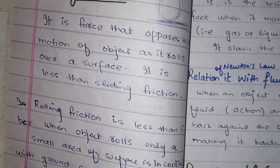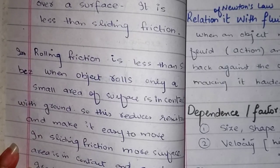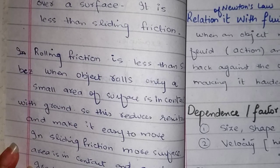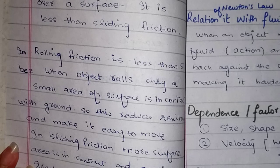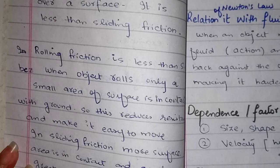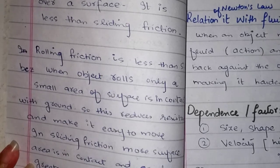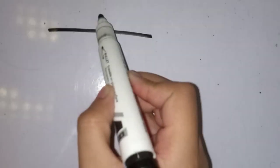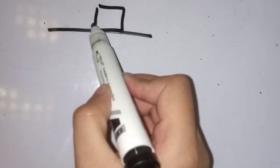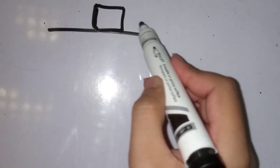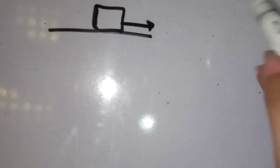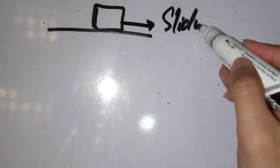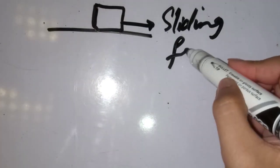An important conceptual question is: why is rolling friction less than sliding friction? We will understand this first. We have seen the ball bearing method. Basically, sliding friction occurs when an object moves flat along a surface — the whole bottom of the object is in contact with the surface, so we call it sliding friction.